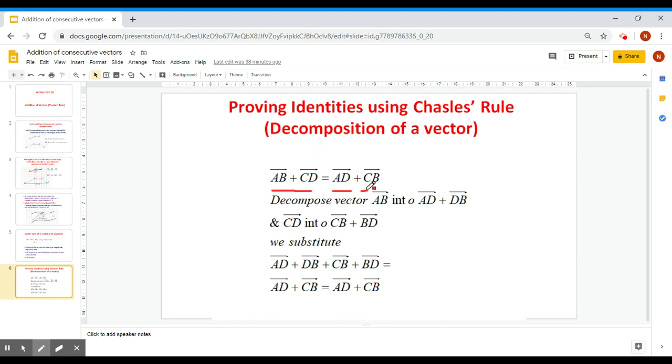Since on this side of the equation, I don't have AD, I can decompose AB. I write it as AD plus DB. Here, this is the extremity, the origin of the second. So the resulting vector is AB. I'm doing the converse of it.